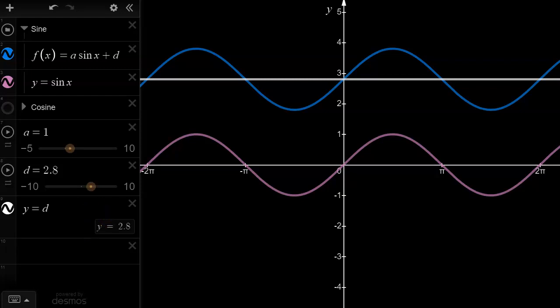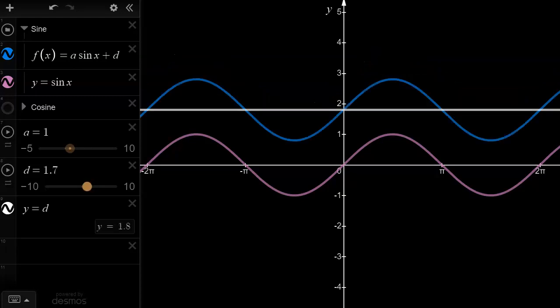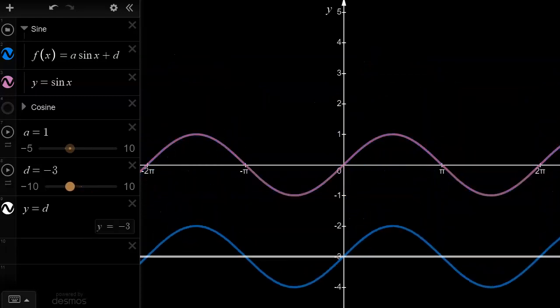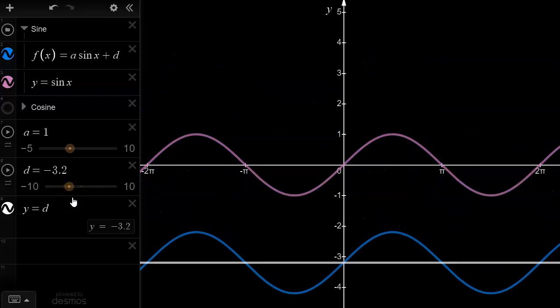So at the end of the day, if the d value is equal to 2.8, which is where it's at right now, then that means the median's equation is y equals 2.8. On the other hand, if I were to slide this curve down to, say, negative 3.2, then if the d value is negative 3.2, the equation of the median is y equals negative 3.2.